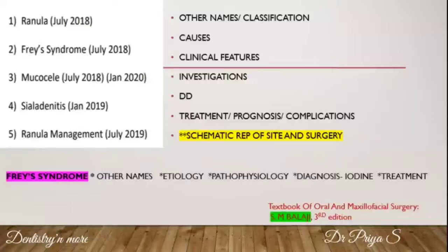For ranula and mucocele, mention their other names and write what classification they belong to. Ranula is a retention cyst and mucocele is an extravasation cyst — that needs to be mentioned. List out all the possible etiology, the causes of this particular cyst, followed by clinical features, investigations, differential diagnosis, and the surgical treatment.